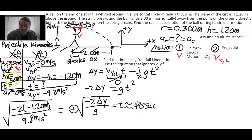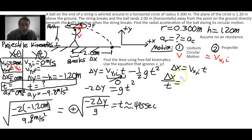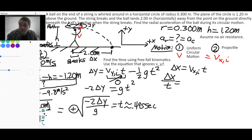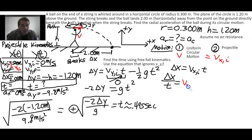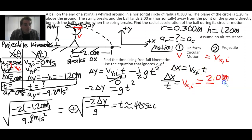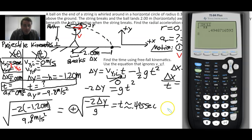Now we use that time on the x side. The only equation, since it's constant velocity, is delta x = v_x_initial × t. Dividing both sides by t: v_x_initial = delta x / t = 2.00 meters / 0.495 seconds. Keeping the previous number in the calculator to avoid rounding, we get approximately 4.04 meters per second.